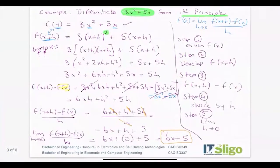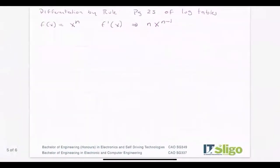Going back to the example I did earlier, 3x² + 5x, the rule tells me I can take down the power in front and reduce the power by one.